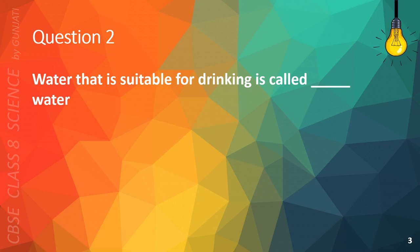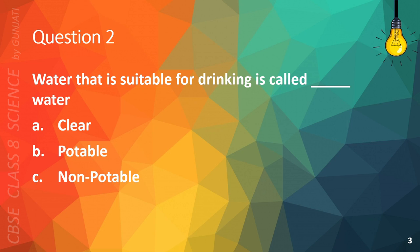Question 2. Water that is suitable for drinking is called blank water. A. Clear. B. Potable. C. Non-potable. Or D. Chlorine water. The correct answer is B. Potable.